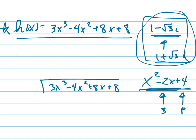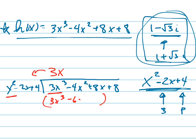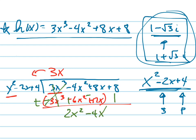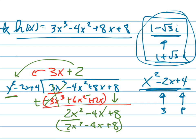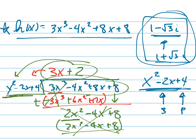So now I'm going to use long division with x squared minus 2x plus 4. I'll change colors here. That gives 3x. When I multiply that, I get 3x cubed minus 6x squared plus 12x. When I subtract all of that — negative, positive, negative — that's gone. I get 2x squared minus 4x, then bring the 8 down to get plus 8. That divided by that is 2. When I multiply the 2 in, I get 2x squared minus 4x plus 8, which is exactly what I had, so it's all gone — which it better be, because I said this was a factor, and it is. And there's my other factor: 3x plus 2.